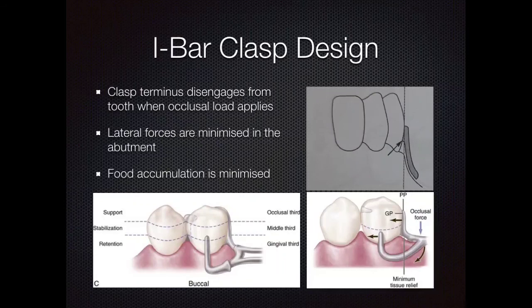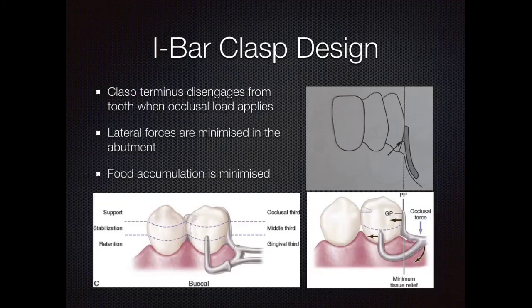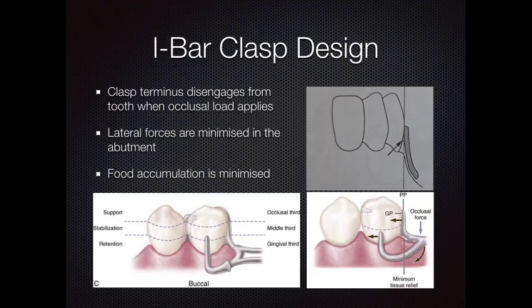Moving on to the i-bar design. The i-bar engages the abutment coming from the soft tissue or attached gingiva, going below the height of contour. The primary advantage of the i-bar design is that whenever an occlusal force is applied, this portion of the i-bar will disengage the abutment. Whenever there is disengagement between the i-bar and the abutment, the amount of force transferred to the abutment is minimized. When these lateral forces are minimized, the overall periodontal health of the abutment is significantly maintained. Also, since it comes from the soft tissue, food accumulation is comparatively minimized.